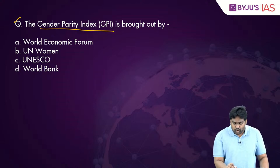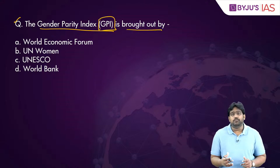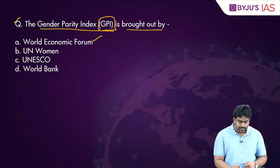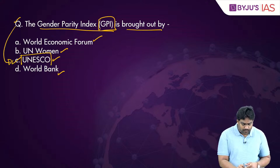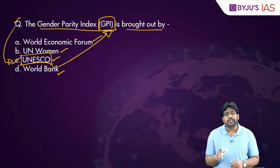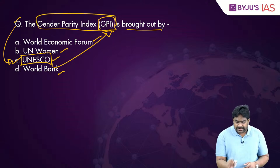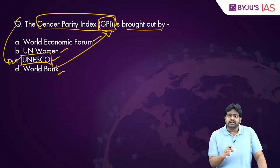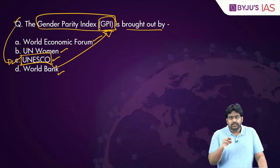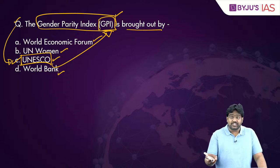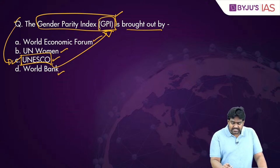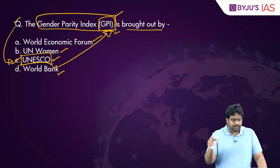The next question asks which international organization brings out the Gender Parity Index or GPI — World Economic Forum, UN Women, UNESCO, or World Bank? The correct answer is option C — UNESCO. It is UNESCO which publishes the Gender Parity Index. This index is often reported with regard to India's education, so it's important to understand what it measures.